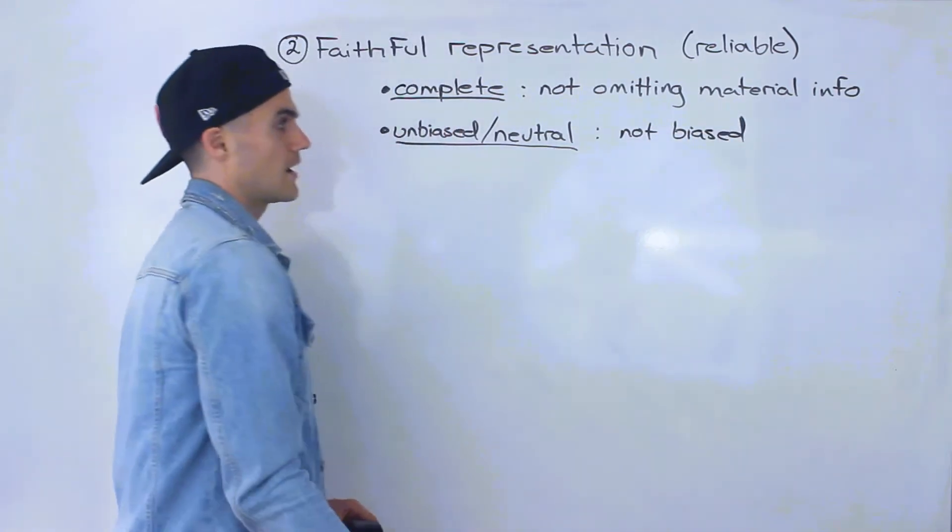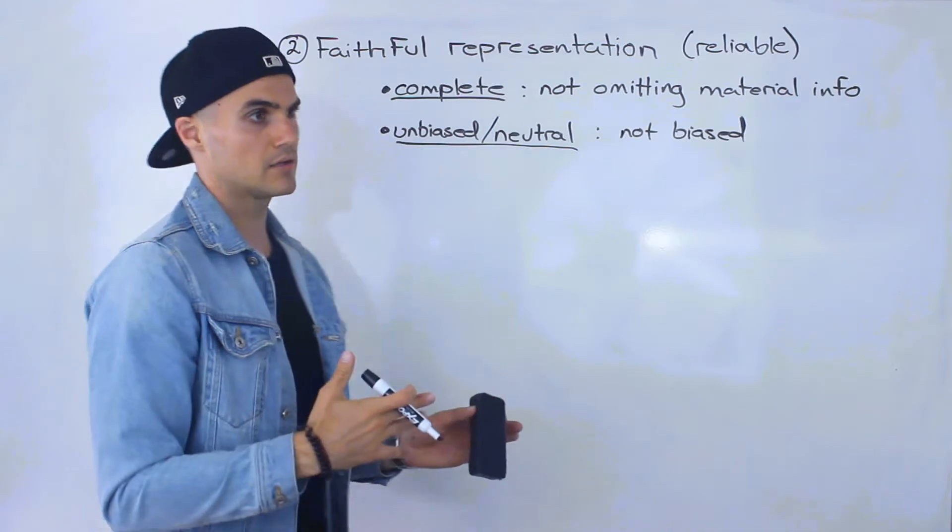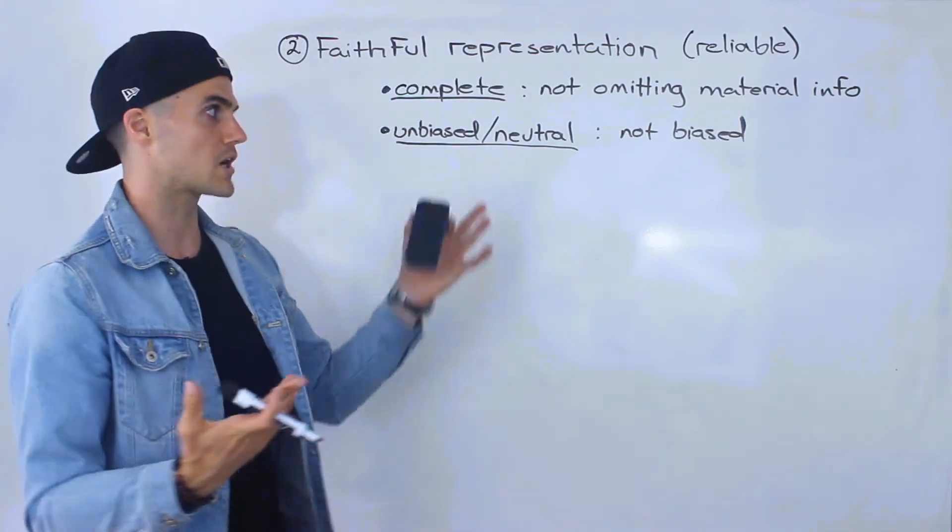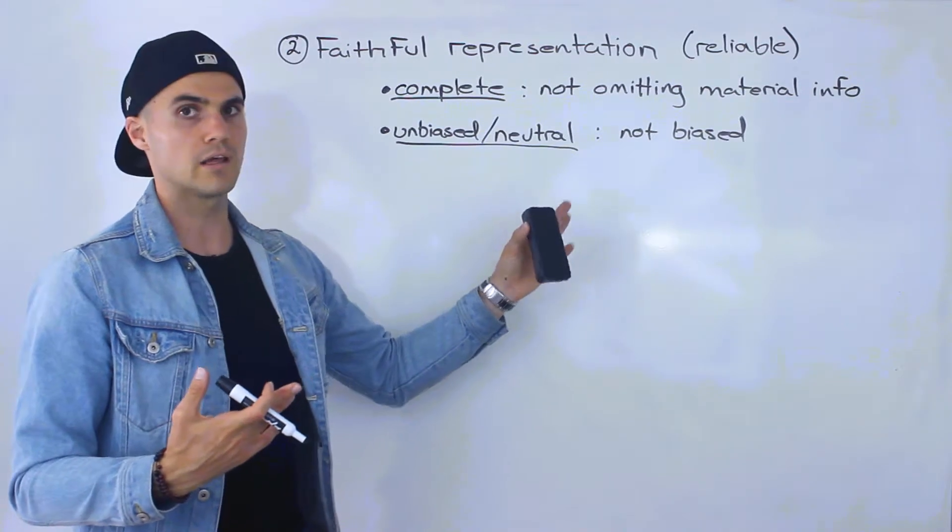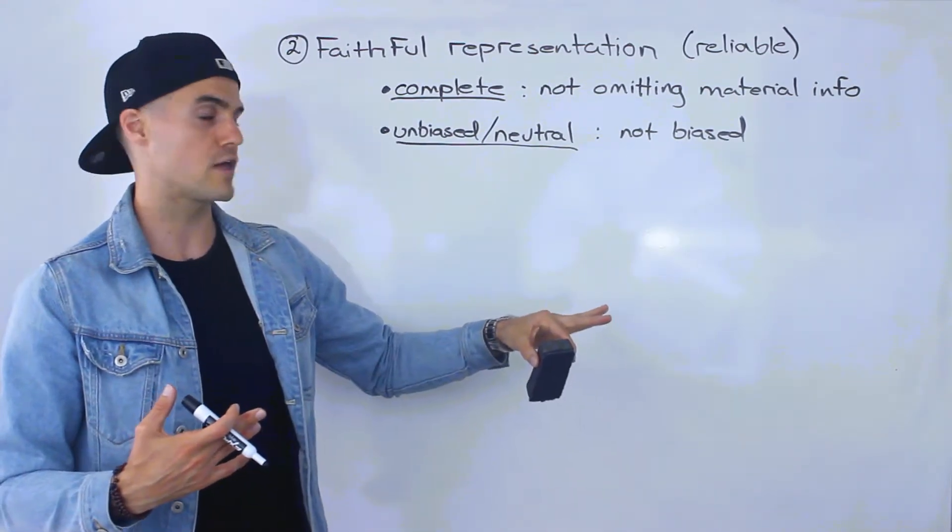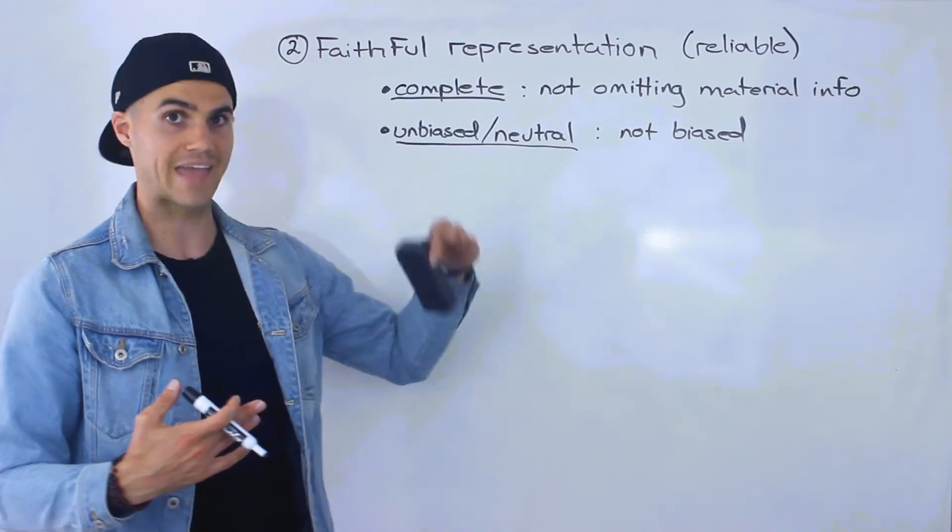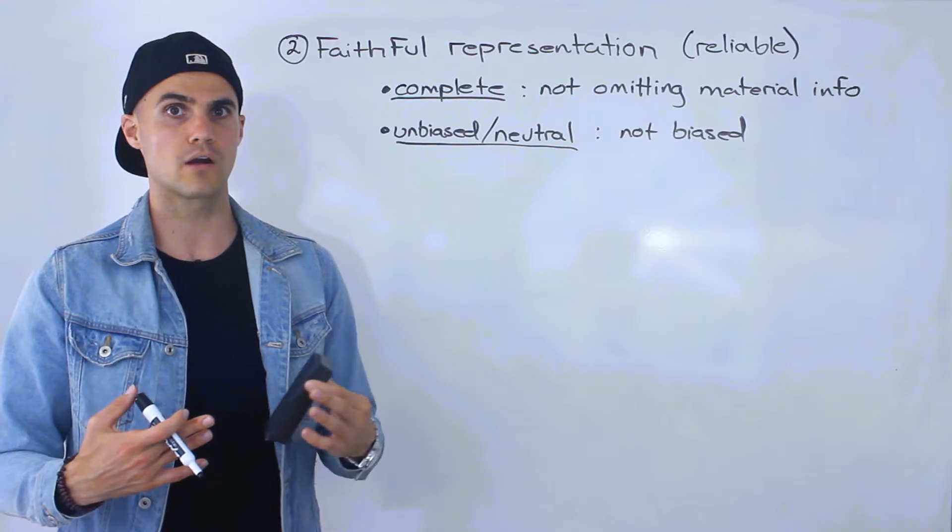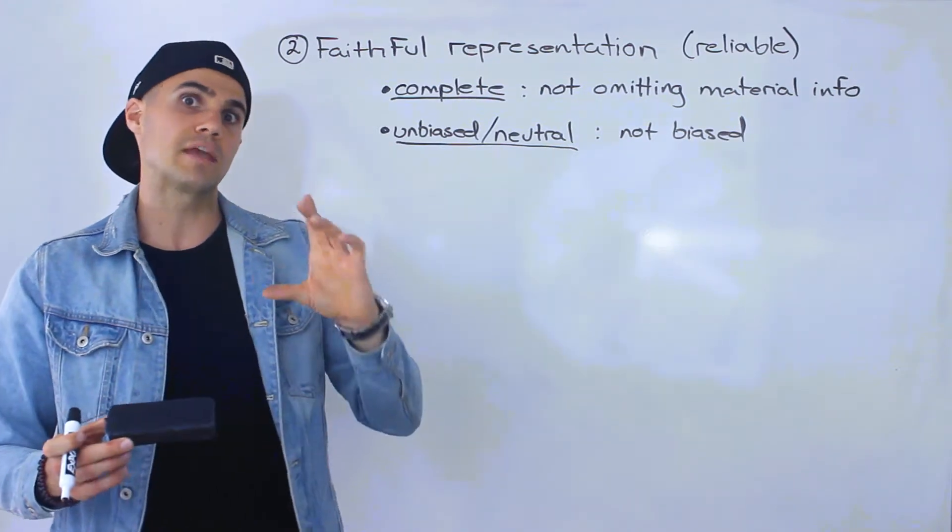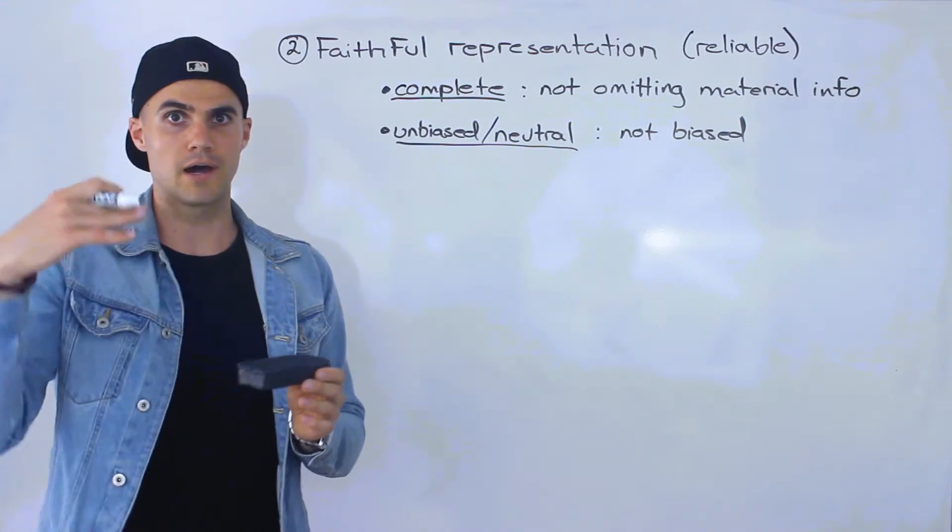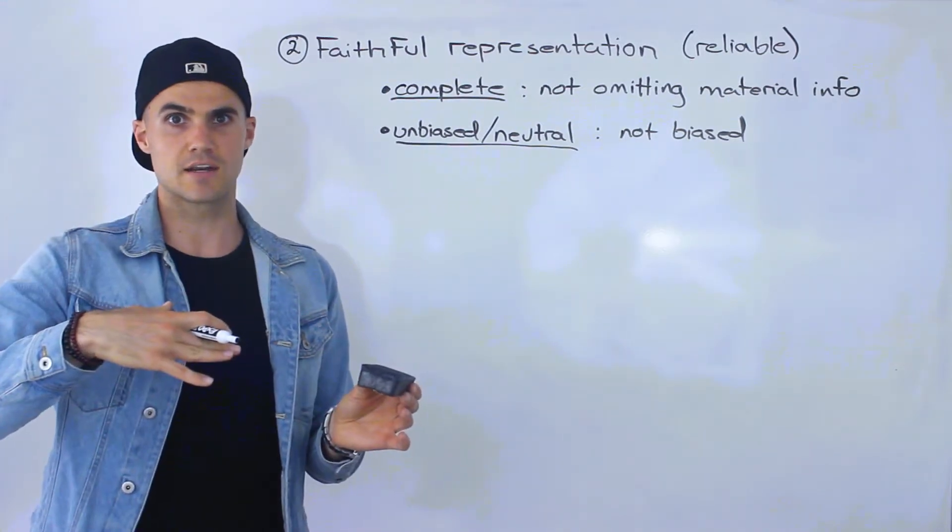So let's say that there's a company that's public and let's say that there's an executive that owns company stock. If the executive is working with the accounting department and influencing them in a way where he's trying to make them inflate the earnings or and or decrease the expenses in an artificial way,